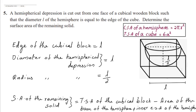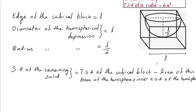The curved surface area of a hemisphere is 2πr², the total surface area of a cube with edge a is 6a², and the area of the circular region is πr². Here, the edge of the cube is L, so the total surface area of the cubical block is 6L², minus the area of the base of the hemisphere which is πr², plus the curved surface area of the hemisphere.